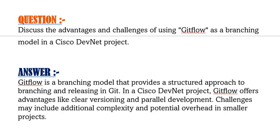Moving to our next question: discuss the advantages and challenges of using Git flow as a branching model in a Cisco DevNet project. Your answer should be: Git flow is a branching model that provides a structured approach to branching and releasing in Git. In a Cisco DevNet project, Git flow offers advantages like provisioning and parallel development. Challenges may include additional complexity and potential overhead in smaller projects.